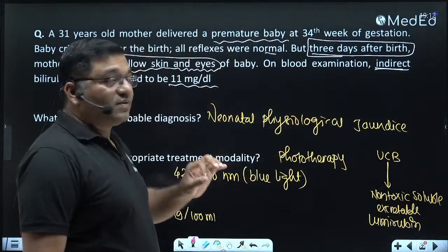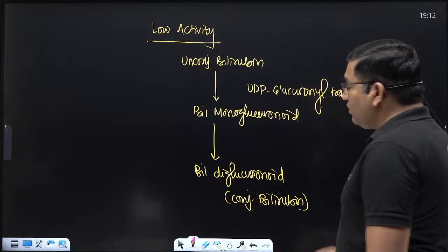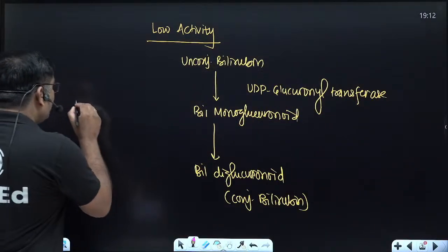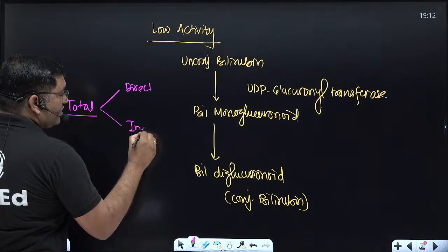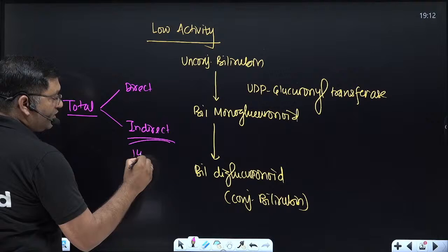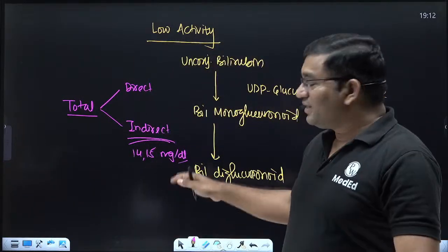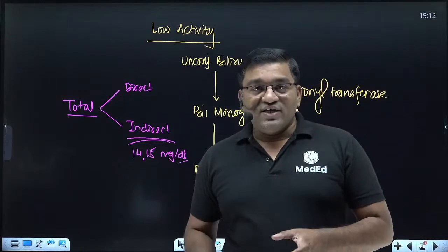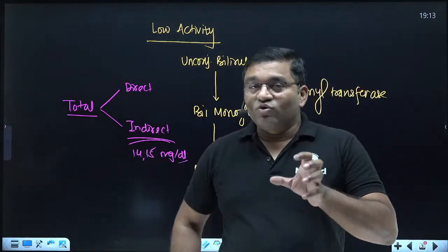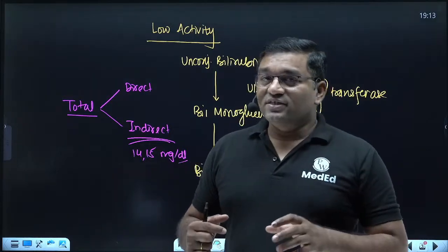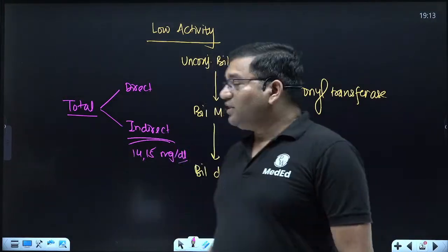The causes of pathological jaundice are different — the most common are RH incompatibility and ABO incompatibility. Indirect bilirubin increases in neonatal physiological jaundice. If bilirubin goes beyond 25 mg per deciliter, exchange transfusion is needed. Otherwise, phototherapy is sufficient. For neonates that do not respond to phototherapy, phenobarbitone is given — it is a hepatic inducer that induces the conjugation, uptake, and secretion of bilirubin.